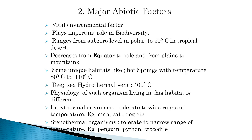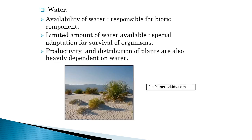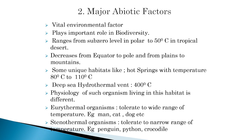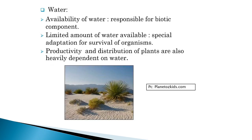The physiology of organisms living in such extreme conditions is very different. There are different kinds of organisms based on temperature tolerance. Eurythermal organisms can tolerate a wide range of temperatures — for example, humans and cats. Stenothermal organisms tolerate only a narrow range of temperatures — for example, penguins, pythons, and crocodiles.